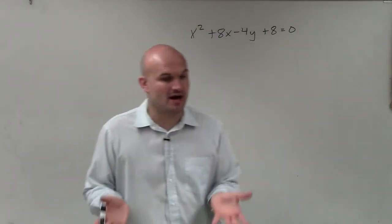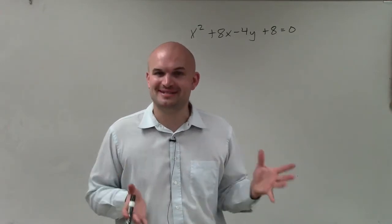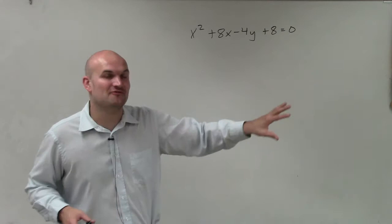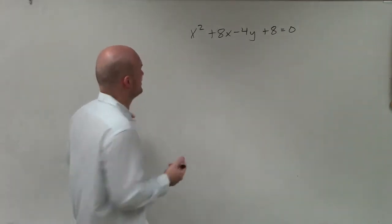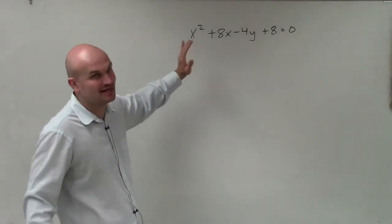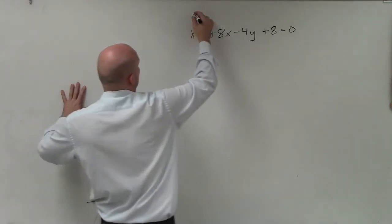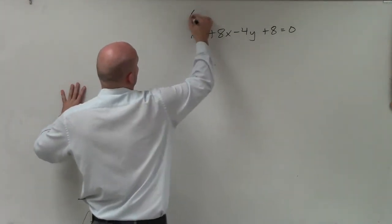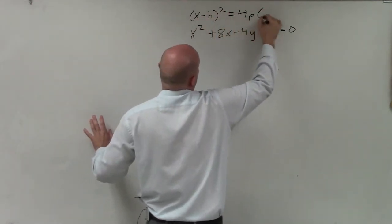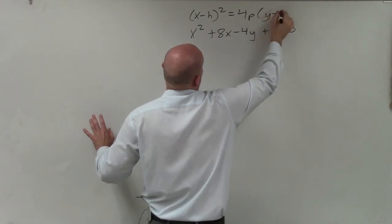The first thing we need to do is identify what type of equation we're going to be dealing with, because right now this is not in any kind of form that we've dealt with. The main thing I look at is which variable is squared. Since I see the x squared, that means I want to write this equation in the form x minus h squared equals 4p times y minus k.